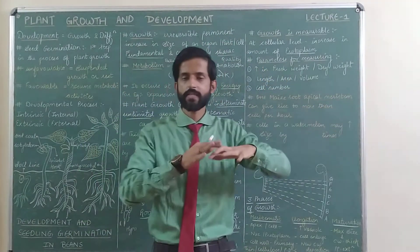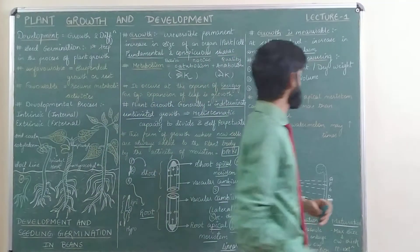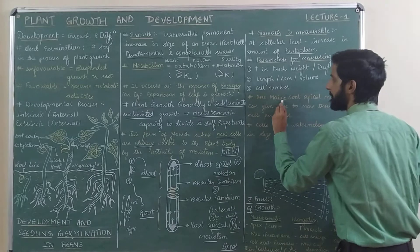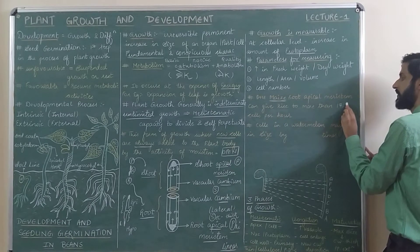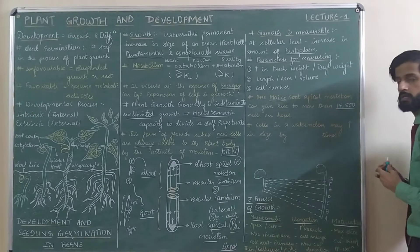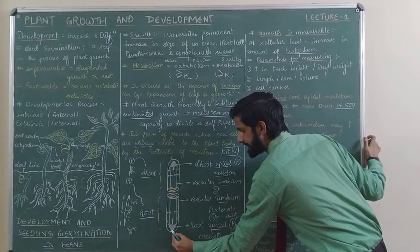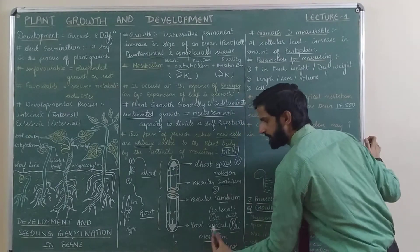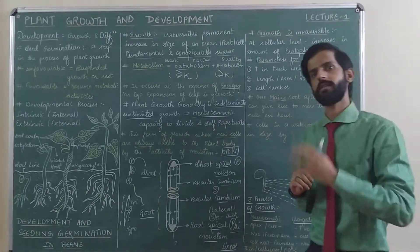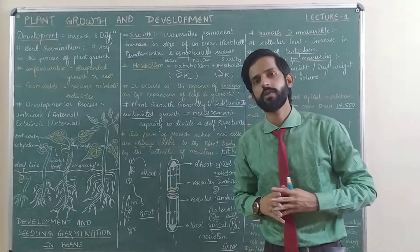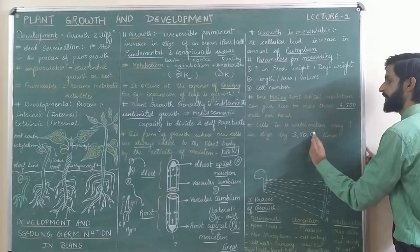There are two important MCQ points here. First: one maize root apical meristem can give rise to more than 17,500 new cells per hour. Second: the cells in a watermelon may increase in size by up to 3,050,000 times from their initial volume.